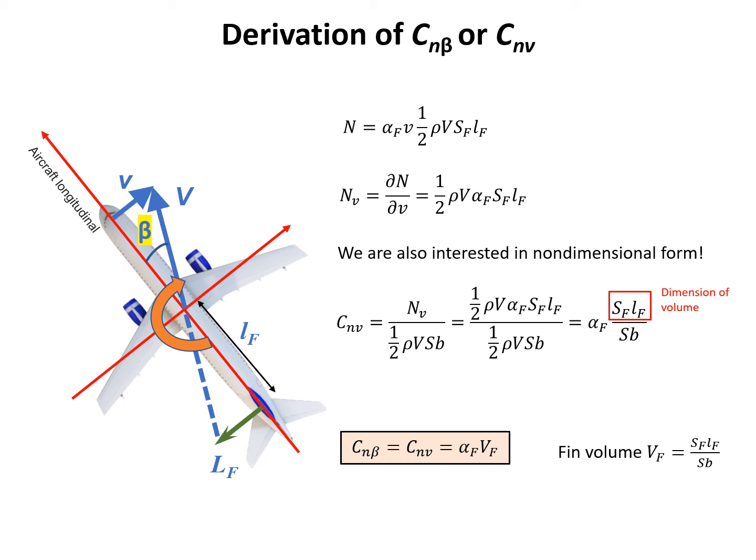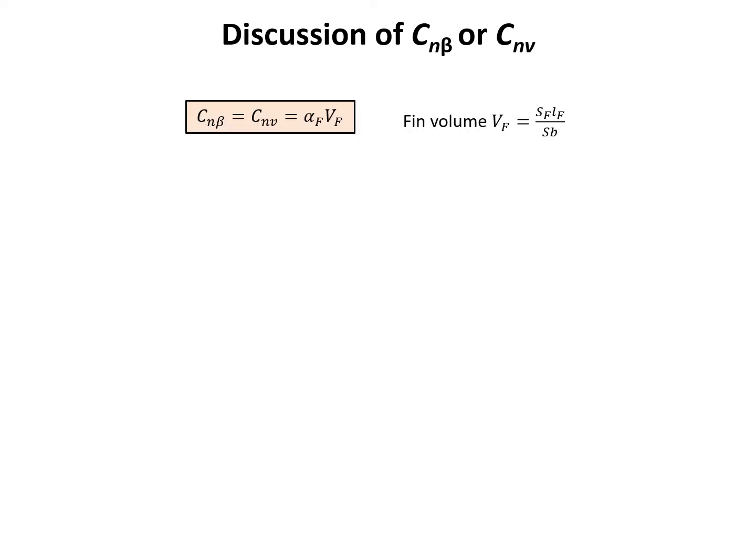So now we have the answer. We finish the derivation. We just finished the derivation of C_nβ or C_nv. Actually, in practice, we usually use C_nβ. Although in the derivation we see that it's based on moment change with respect to linear velocity, in practice we use C_nβ instead of C_nv. They are actually the same thing.